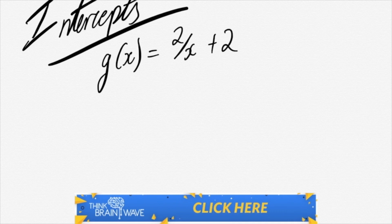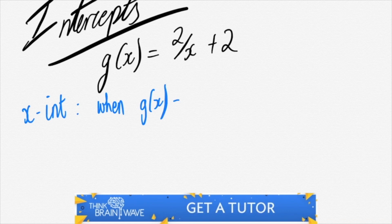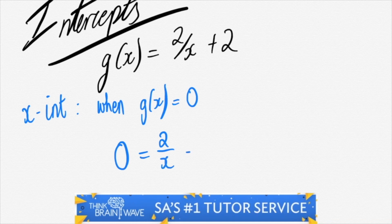As we continue with the same function, we say our x-intercept is when g of x is equal to 0. So we say 0 is equal to 2 over x plus 2.